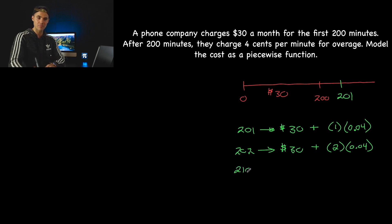So your total charge is going to be $30.08. If you talk 210 minutes, you're going to get charged that flat fee of $30. There's an overage amount of 10 minutes, and you're getting charged $0.04 for each of those overage minutes. So that's going to be a total extra charge of $0.40. So your total charge for 210 minutes is going to be $30.40.